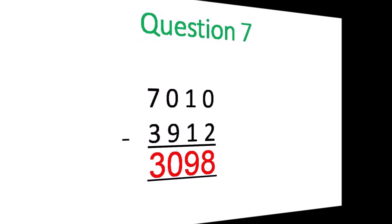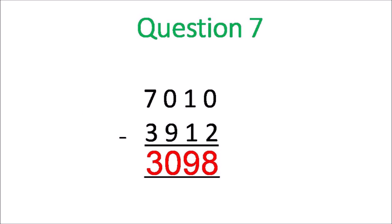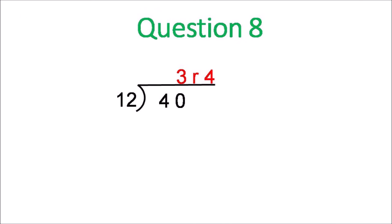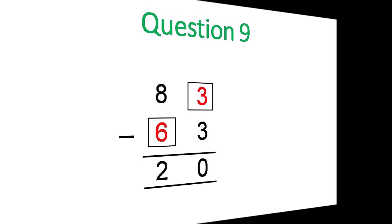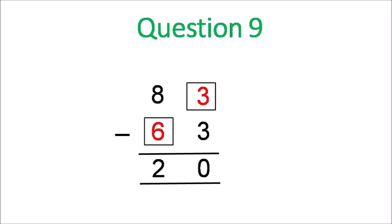Question 7. You have to do renaming. Answer 3,098. Question 8. The division divide 40 by 12. 3 remainder 4. 3 times 12 is 36. Numbers in the box will be 3 and 6.